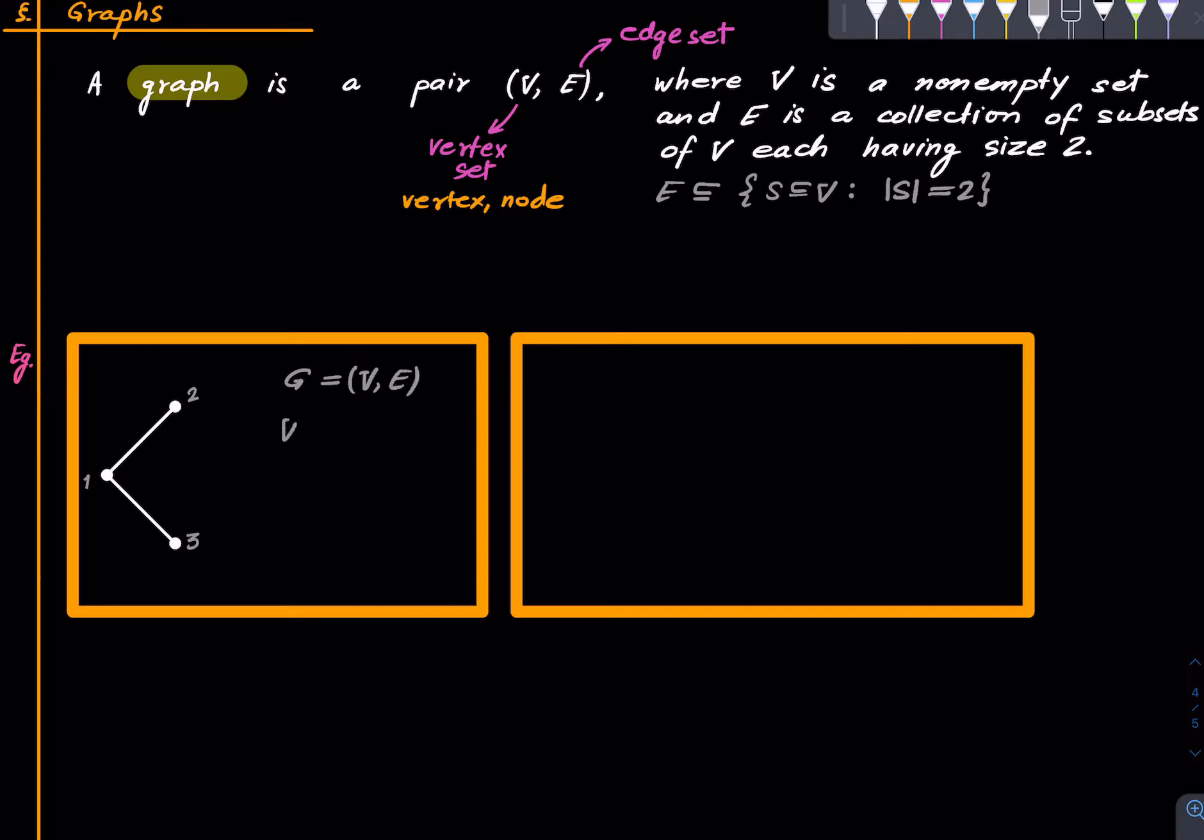We have to formalize what exactly we mean. So when we draw a picture like this the graph that we are really talking about is a pair (V, E) where V is the set of all the nodes and E is two element subsets: {1,2} and {1,3}. So this finite data is really the object that this is trying to capture.